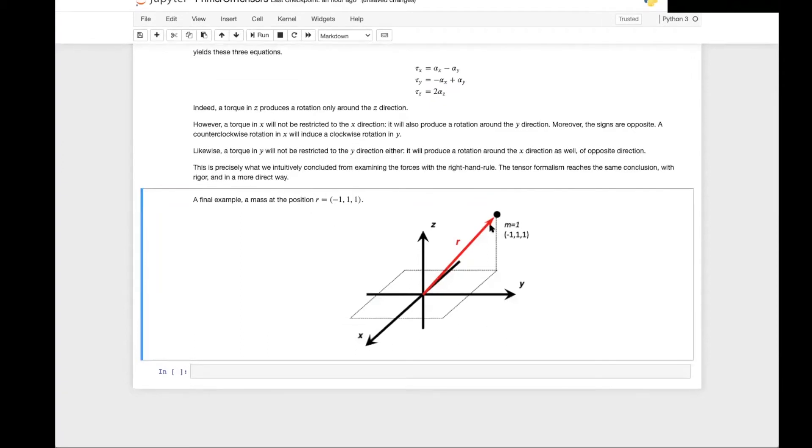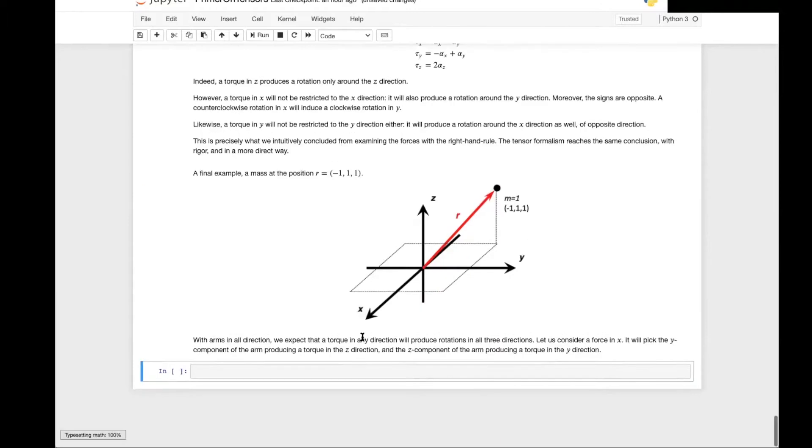So let's consider a final example. A mass, again a unit mass, at the position minus 1, 1, and 1. So all of the positions are off axis. With arms in all directions, we do expect that a torque in any direction will produce rotations in all three directions.